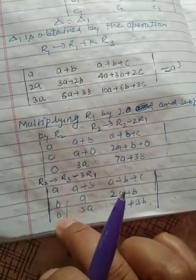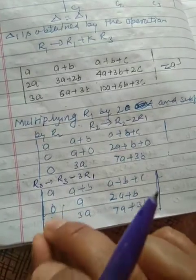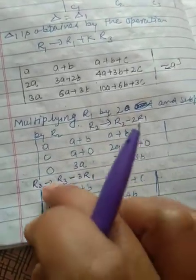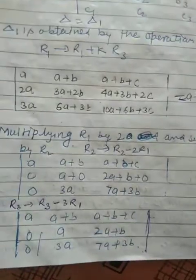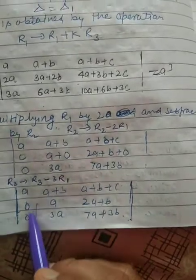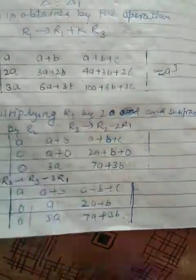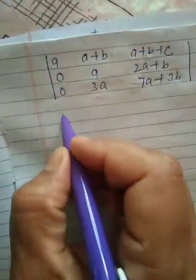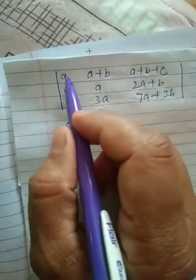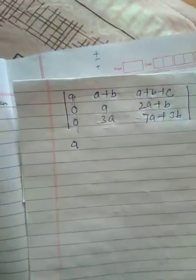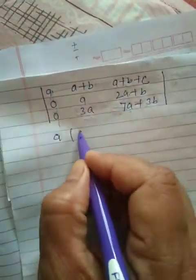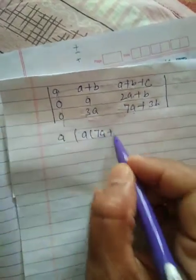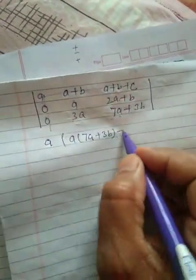Now we have two consecutive zeros in the first column, so remember that you have to expand this determinant by the first column. The method of expansion I already explained many times, but today I will also show: first delete the respective row and column.